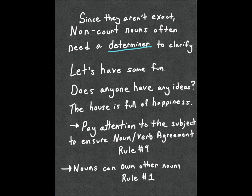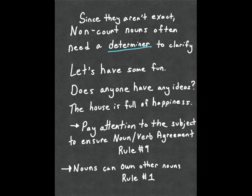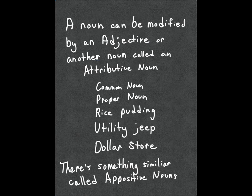It's important to know whether a noun is count or non-count because you want to make sure you've got noun-verb agreement and you're setting the sentence up for success. Check out rule number nine on noun-verb agreement, and rule number one about forming the possessive. The earlier example about Taylor Swift's concerts is an example of a possessive — how a noun can essentially own something else.